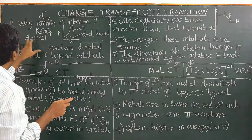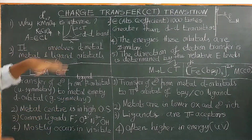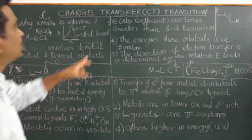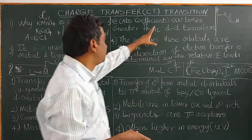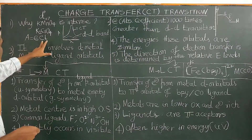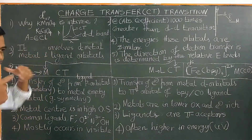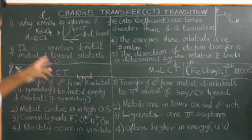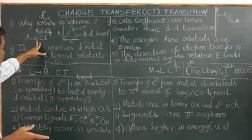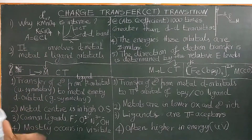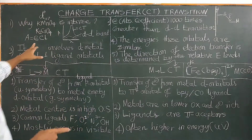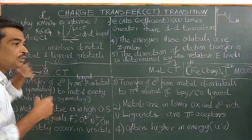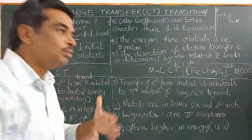For a fixed path length — for example, 1 centimeter — absorbance A is directly proportional to concentration C, where epsilon (ε) is the proportionality constant called the molar absorption coefficient. When concentration is unity (1 mol per liter) and path length is unity, then absorbance equals the molar absorption coefficient epsilon.